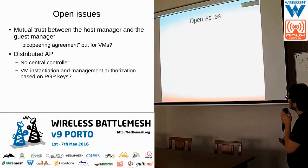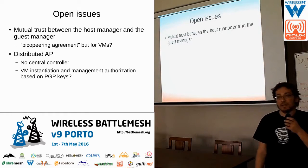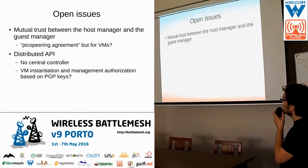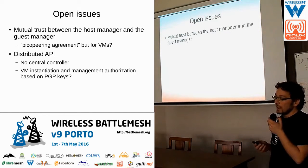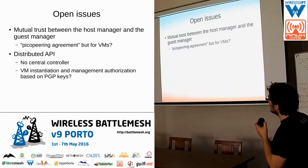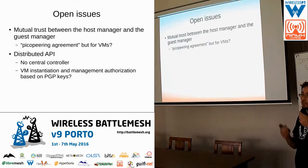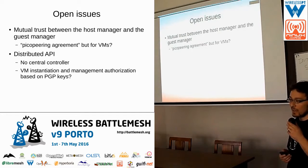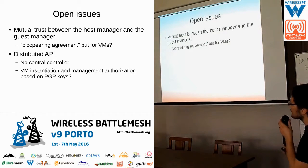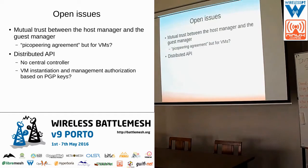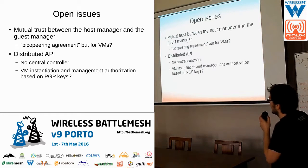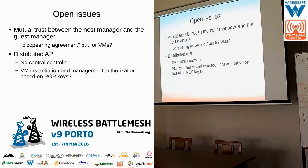We have some open issues. One is mutual trust between the person hosting the virtual machine and the guest — I'm using somebody else's computer and somebody else is using mine. We're thinking of something like a peering agreement but for virtual machines: when I want to use somebody else's computer I accept a license analogous to a peering agreement for community networks. Another open issue is having a distributed API — not a centralized controller. There is also a trust issue there, so perhaps we can rely on the web of trust and use PGP keys for accessing other people's APIs in a trusted way. That's all, thank you.